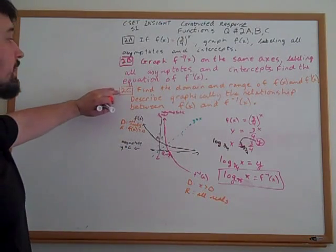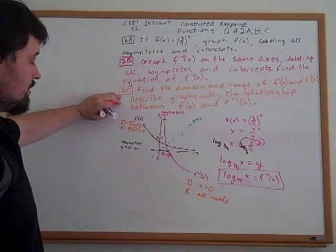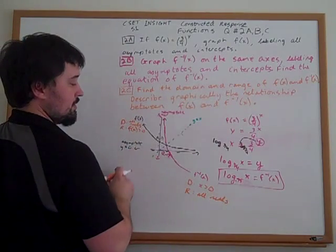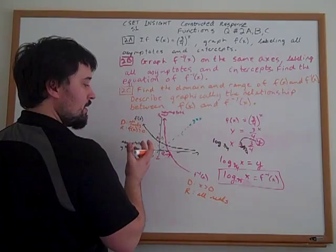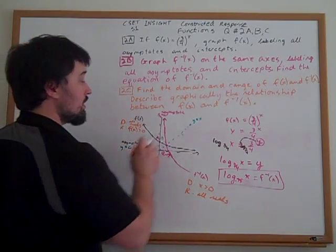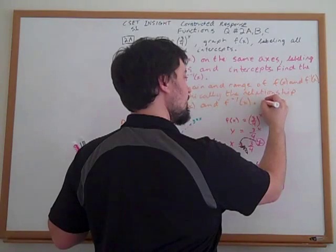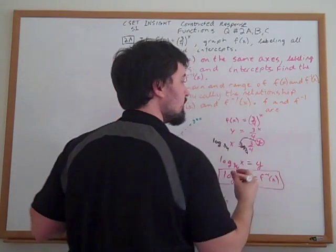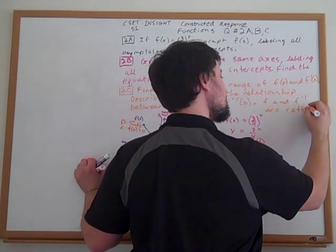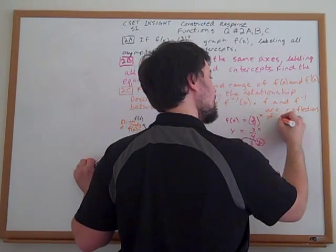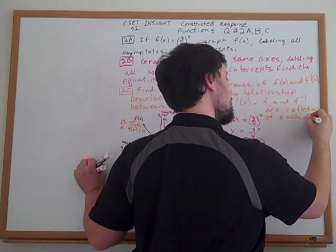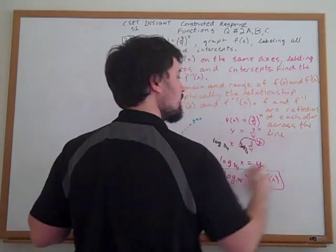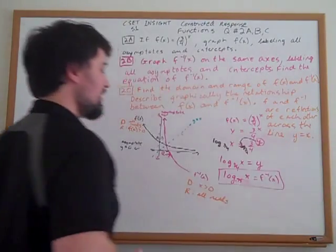Now describing graphically the relationship between f of x and f inverse, what we see is that they are mirror images of one another. They are reflected across the line y equals x. Each and every x, y coordinate on the other graph becomes y, x coordinate. So describing it graphically, f and f inverse are reflections of each other across the line y equals x. And there's part c.